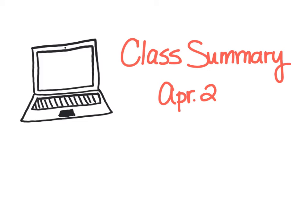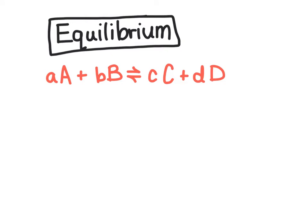In this video we are going to quickly summarize the class from April 2nd. To do so we're going to use this model equation that's shown. The coefficients are represented by the lowercase letters and the chemical species that are present are represented by the uppercase letters. We're going to assume that all of these species in this equation are in the gas form.